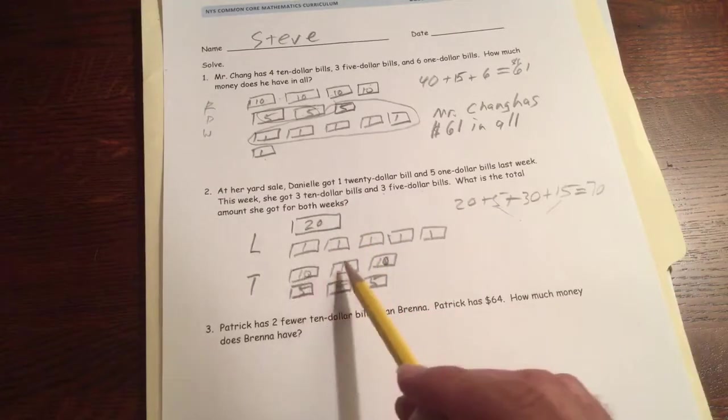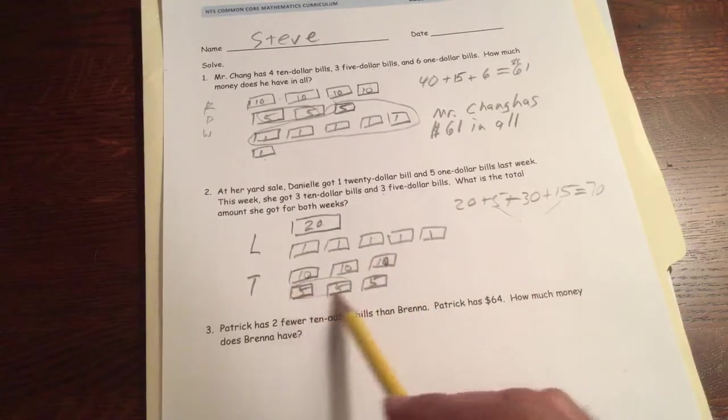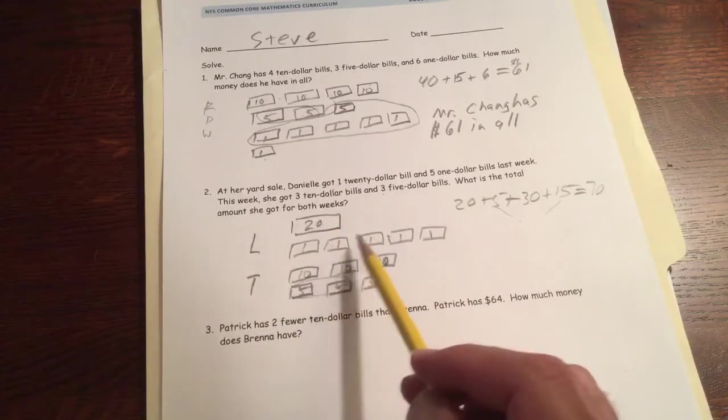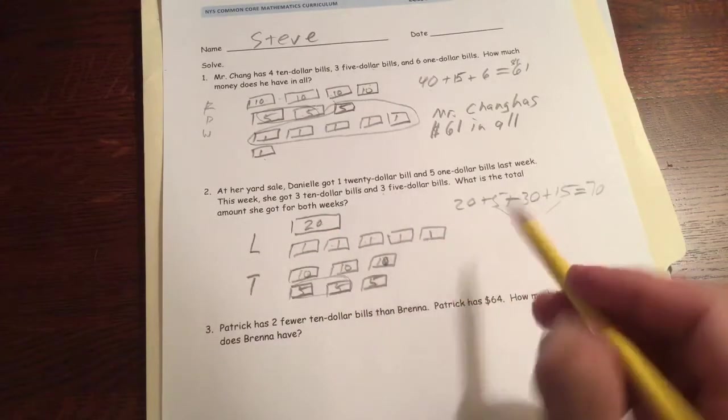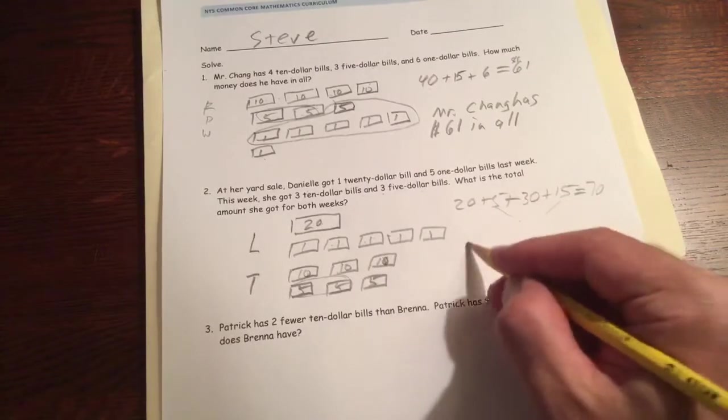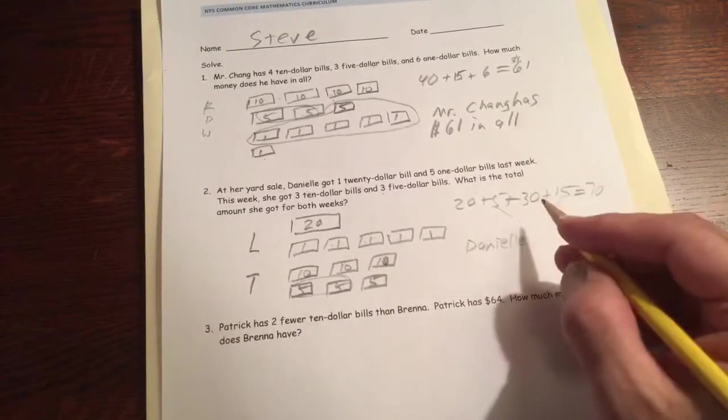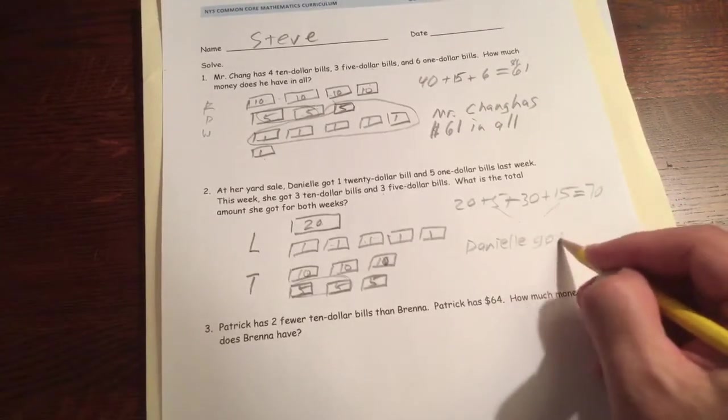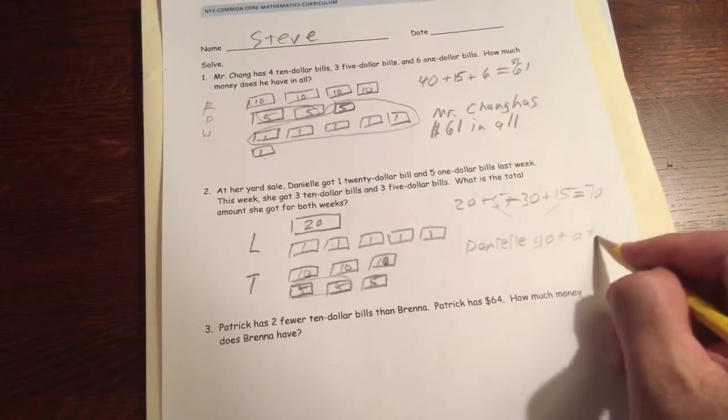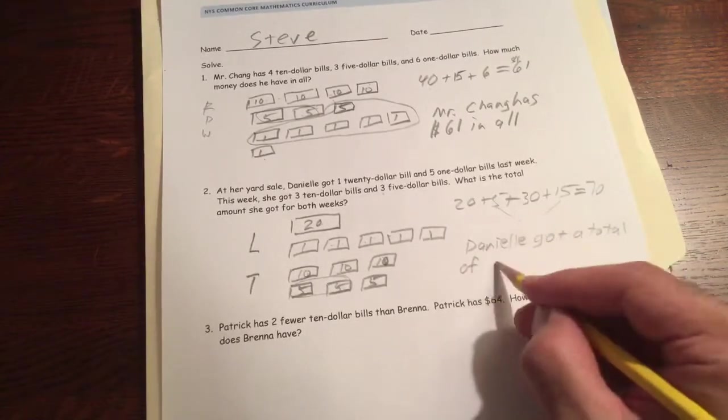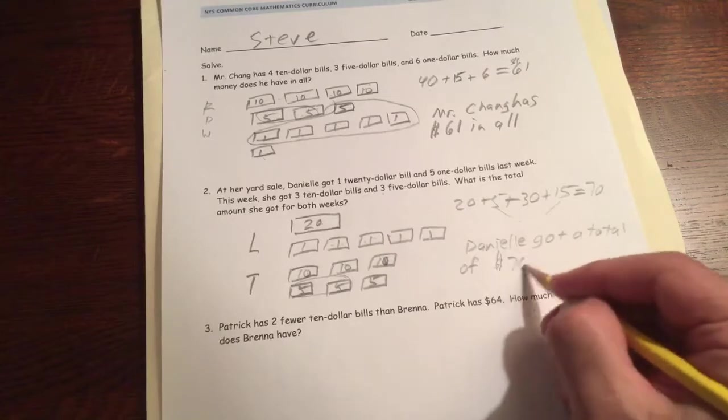Or we could just count it. Twenty, thirty, forty, fifty, sixty, 65, 66, 67, 68, 69, 70. Danielle got a total of $70.